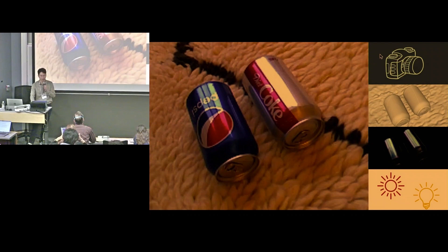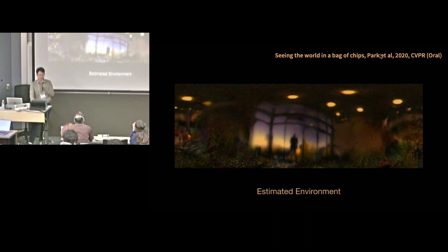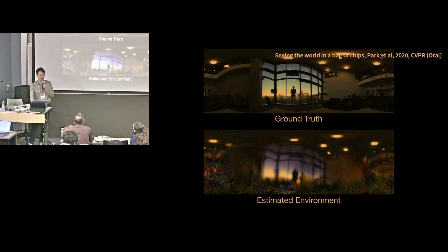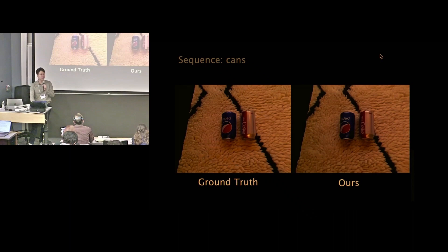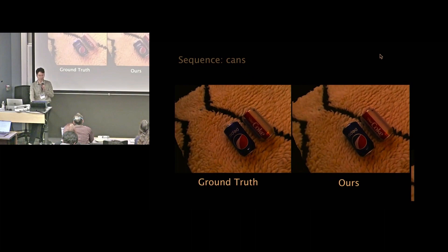Early in my PhD I focused on recovering the physical structures of the world from 2D images — recovering camera poses, geometry, lighting, and surface material from multiple images. Once you recover the physical properties of the scene, you can use it for interesting applications. For example, given a video of a shiny bag of chips, our method was able to recover detailed scene lighting, and we can render the scene from arbitrary perspectives not recorded — this is called novel view synthesis.